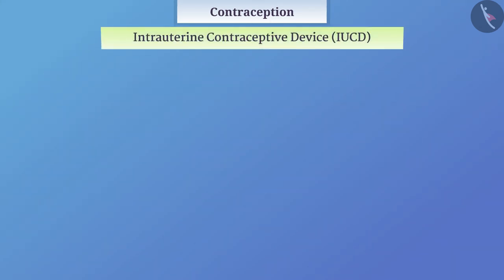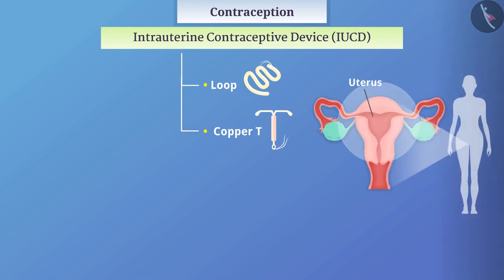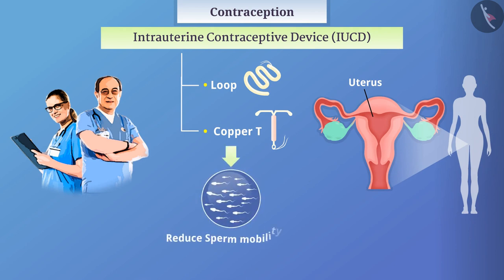Intrauterine contraceptive devices, or IUCDs, such as loops and copper-T, are placed in the uterus by experienced doctors or nurses. These devices reduce sperm mobility and their fertilization ability.